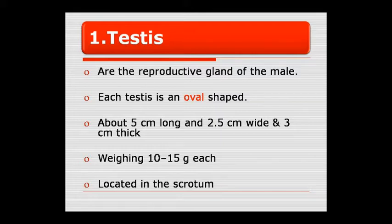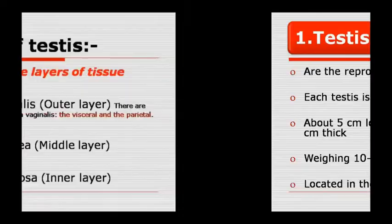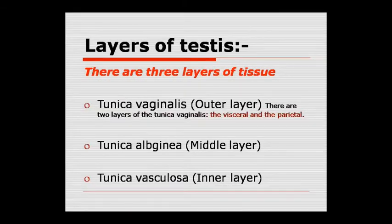The testis is oval in shape, approximately 5 cm long, 1.5 cm wide, 4 cm in one dimension and 3 cm in another. The weight is 10 to 15 grams. It is located in the scrotum.